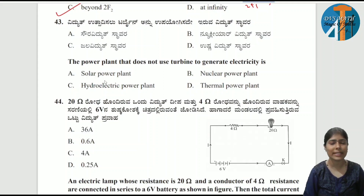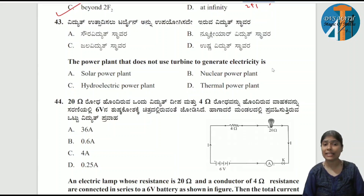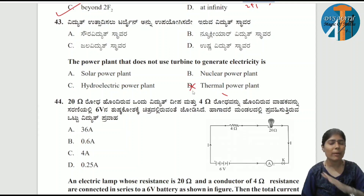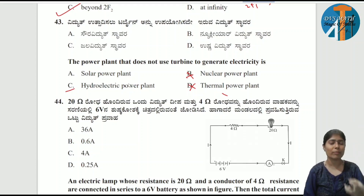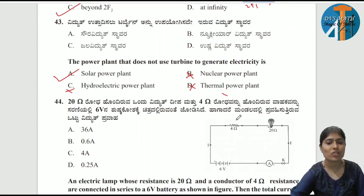Next question is from sources of energy. The power plant that does not use a turbine to generate electricity — thermal power plant burns coal to produce steam, and steam rotates the turbine. Nuclear power plant uses nuclear materials like uranium to produce steam and rotate the turbine. Hydro-electric power uses the force of water to rotate the turbine. The answer is solar power plant — it does not use a turbine to rotate.